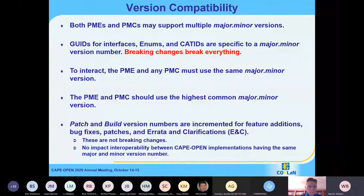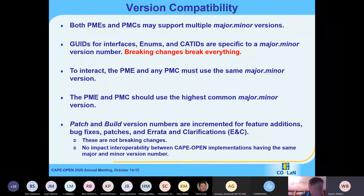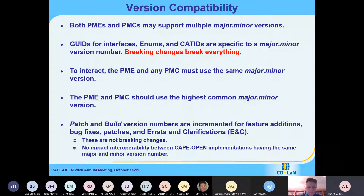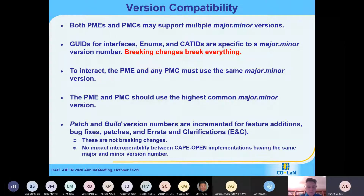The next issue is version compatibility. It's expected that modeling environments and modeling components support multiple CAPE Open versions — major and minor versions. The GUIDs for the interfaces are specific to a single major-minor version number combination. So CAPE Open 1.1 will not be compatible with 2.0, and when we go from 2.0 to 2.1, all the GUIDs would be changed again. Basically, anytime we have some kind of a breaking change, they're going to break everything.